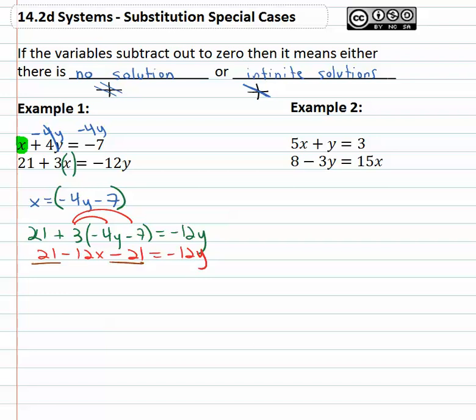Solving then, we'll distribute and we get 21 minus 12y minus 21 equals negative 12y. Combining like terms, 21 minus 21 is zero. So we have negative 12y equals negative 12y. We want to get the variables all on one side, so we'll add 12y to both sides. But when we do that, we're left with zero equals zero.